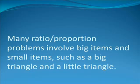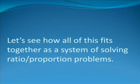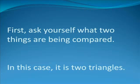Many ratio proportion problems involve comparisons of large and small things. In this case, the things being compared are triangles, one big and one small. Now versus later is also a common comparison found in ratio proportion problems. With those general comments having been made, let us start setting up this problem. First, ask yourself what two things are being compared. In this case, it is two triangles.